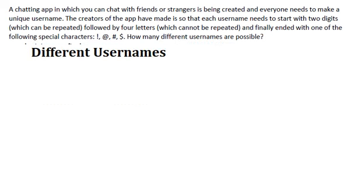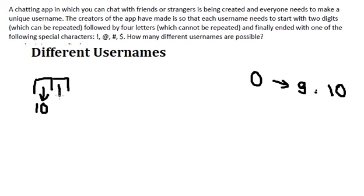We know that we start with two digits and they can repeat, so we put two locations in here. We know that we have from zero to number nine, the total is about 10 digits. So the first one we have 10 digits we can select, that means we have one out of 10. And the second one we still have one out of 10 because we can repeat again.